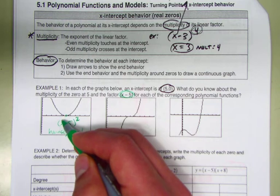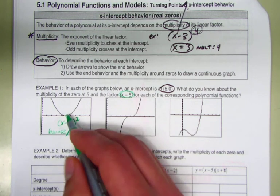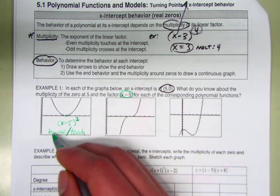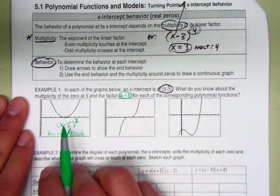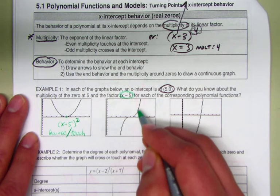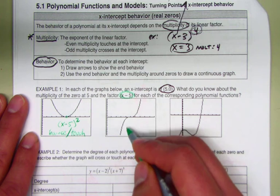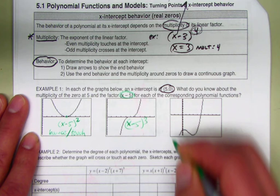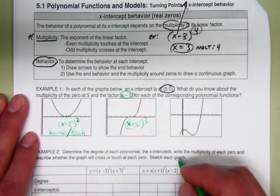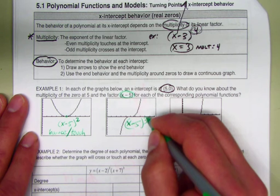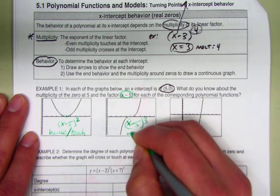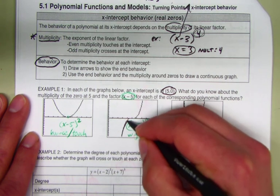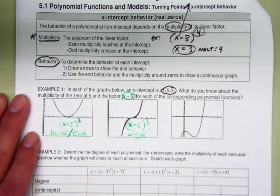Math Excel likes to say that it touches it, but that can be ambiguous. Just make sure you know that's the same thing. For the other shape — x to the third, maybe fifth, anything odd — we call this a wiggle, because the graph wiggles its way through the x-intercept.